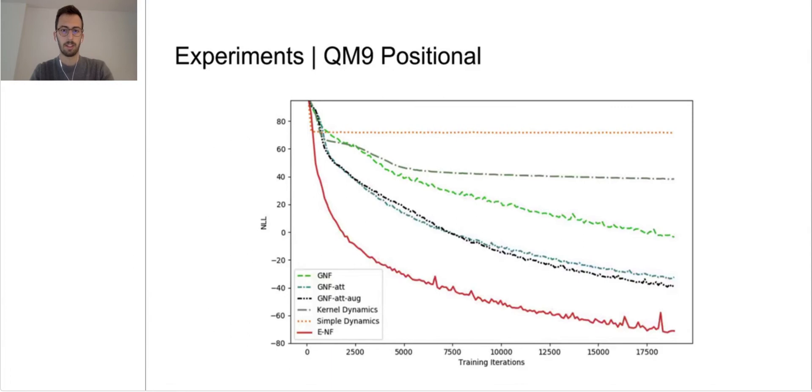Additionally, we also analyze the negative log-likelihood in a subset of QM9 where only positional data x is considered. Again, we see that in terms of log-likelihood, our method significantly outperforms its non-equivariant baselines and previous equivariant flow methods.